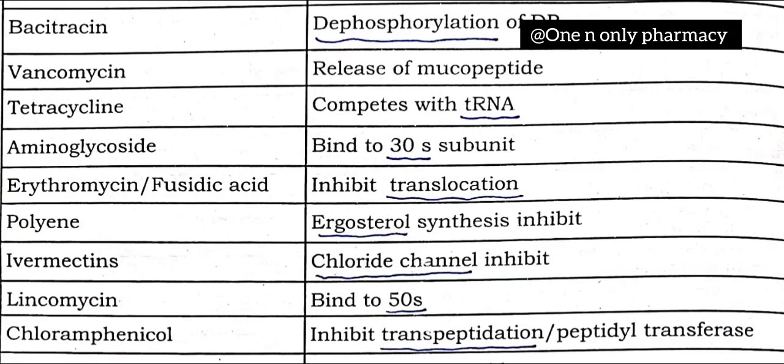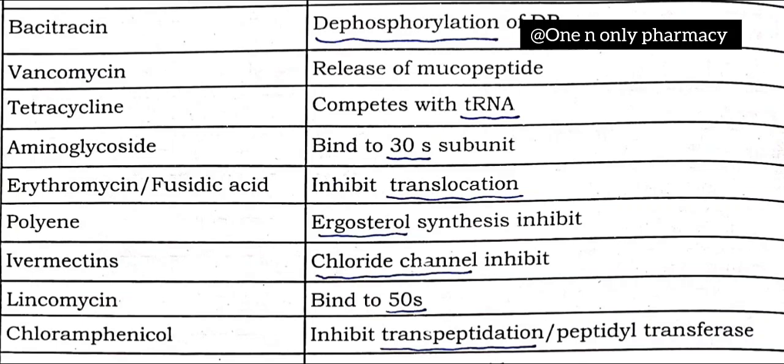Tetracycline competes with tRNA to inhibit RNA synthesis, i.e., ribonucleic acid synthesis. Aminoglycosides bind to the 30S ribosomal subunit. Erythromycin and fusidic acid inhibit translocation.